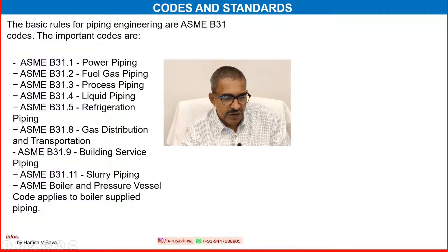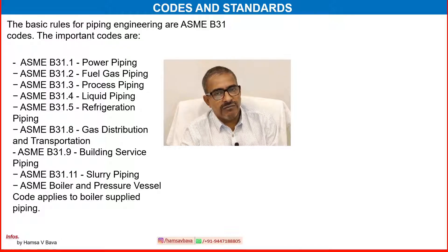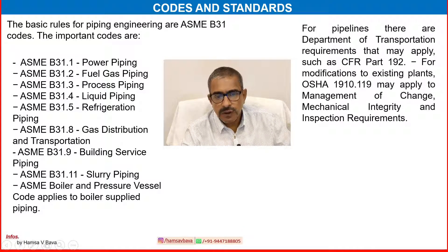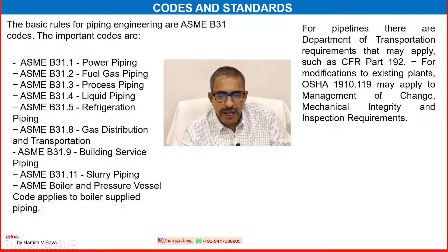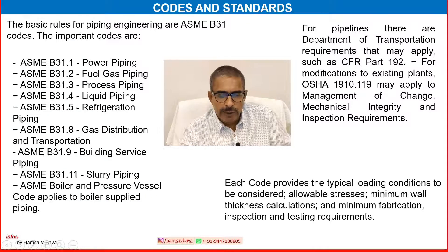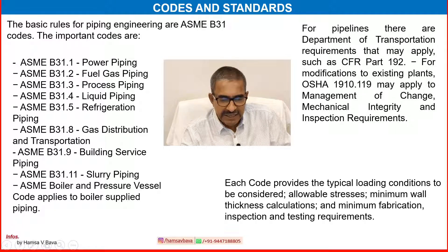There are various piping codes for different design applications. For pipeline, there are Department of Transportation requirements that may apply, such as CFR part 192. For modification of existing plants, OSHA 1910.019 may apply to management of change, mechanical integrity and inspection requirements. Each code provides the typical loading conditions to be considered, allowable stresses, minimum wall thickness calculation, and minimum fabrication inspection and testing requirements.